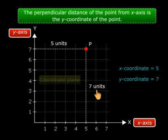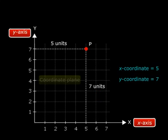Now we always write the coordinates of a point as the x-coordinate comma the y-coordinate. So what are the coordinates of point P? Yes, five comma seven. Simple.